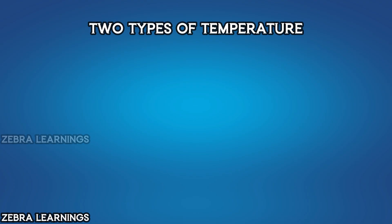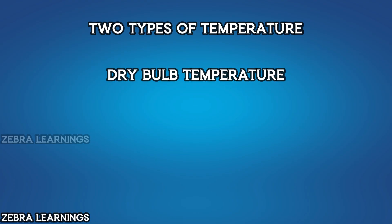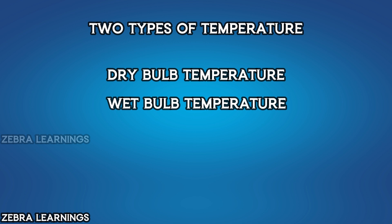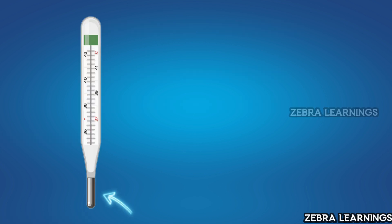There are two types of temperature: dry bulb temperature and wet bulb temperature. The bulb is the place in the thermometer where the mercury is located. When this bulb heats up, the mercury inside expands. We can measure the temperature value by how far the mercury expands.